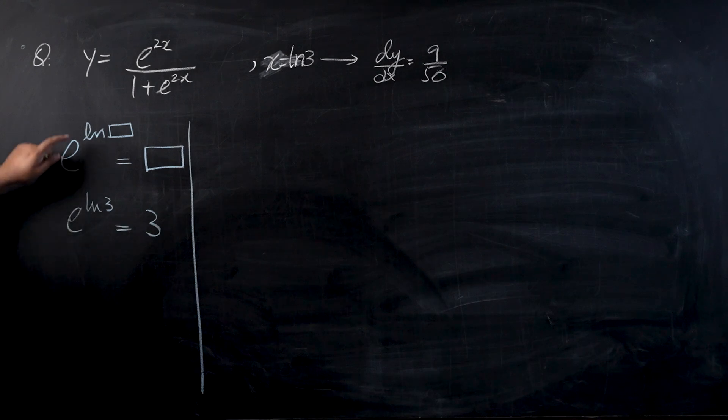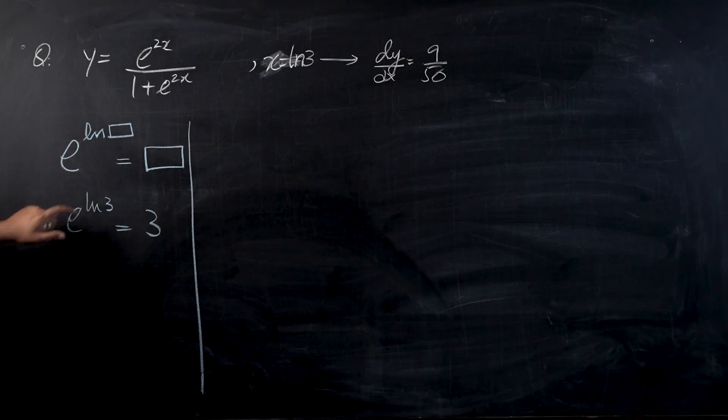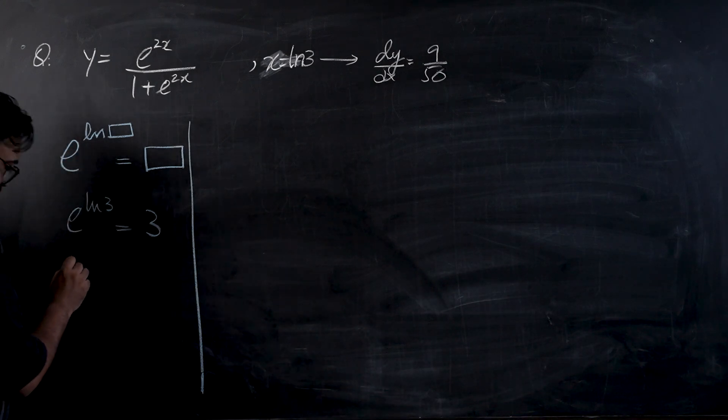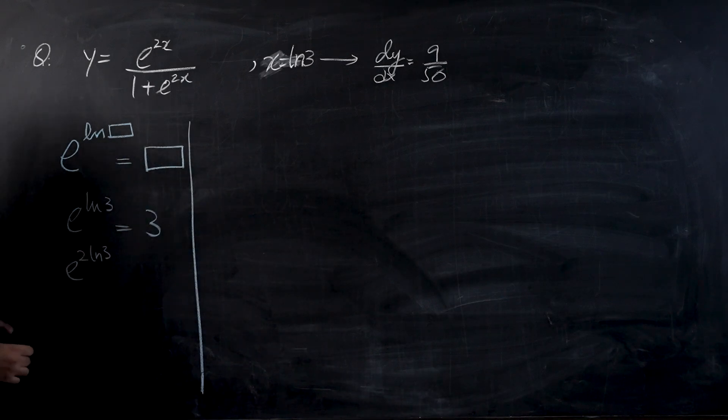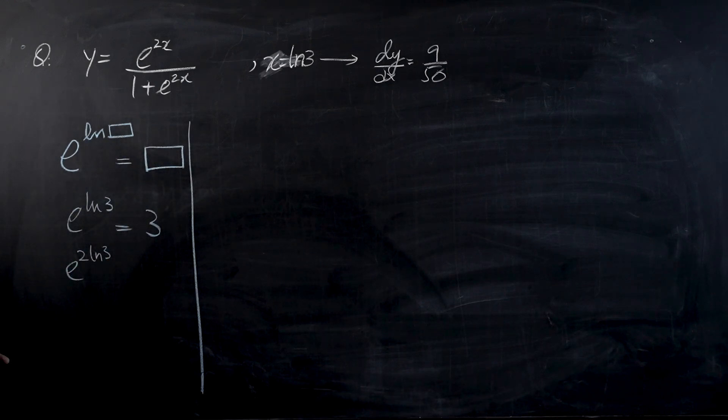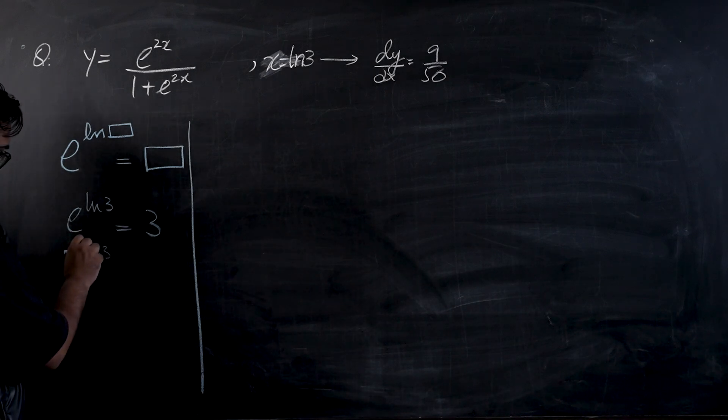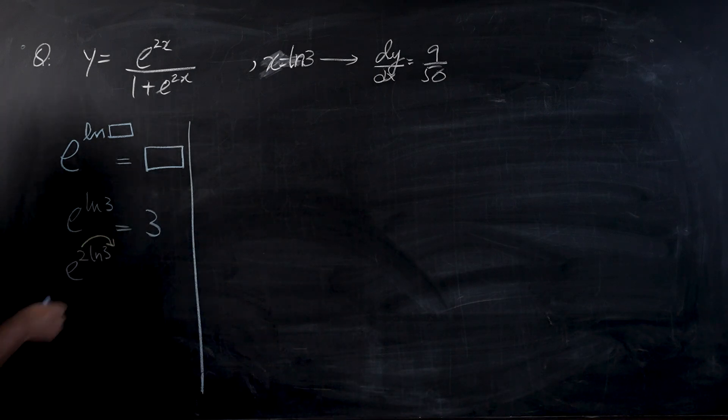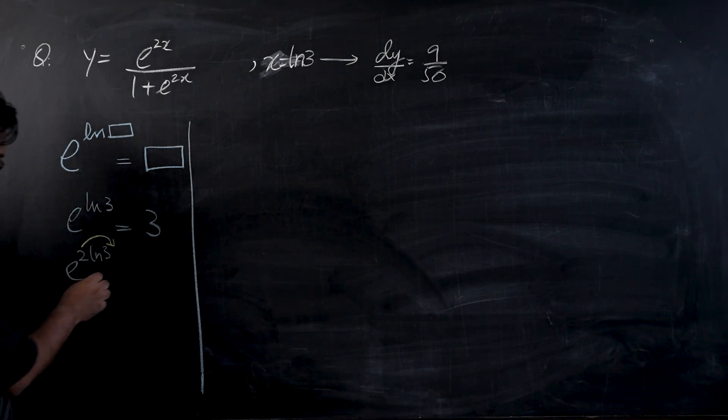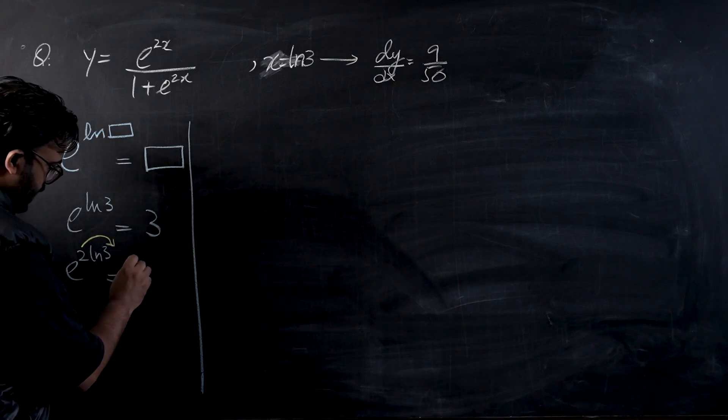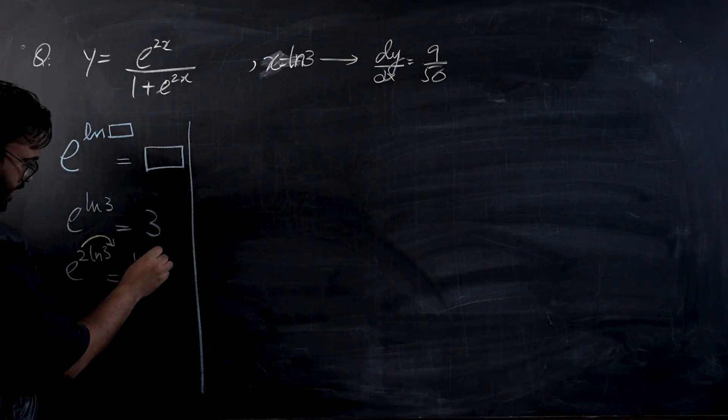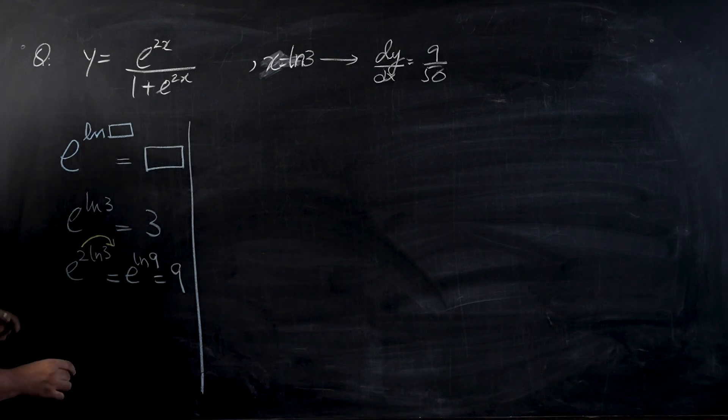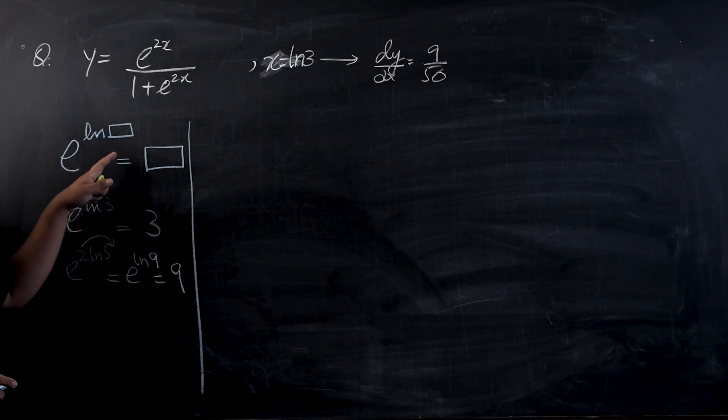But there's just one thing that you have to be a little bit careful about: you cannot have a coefficient behind the log term. So if you have e raised to power 2 log 3, you cannot apply that property right now. What you have to do first is bring this 2 into the power, and you will write e raised to power ln of three squared, which becomes nine, and the final answer would become nine.